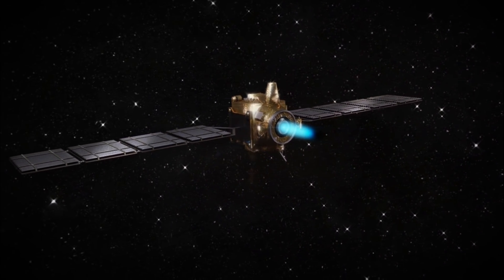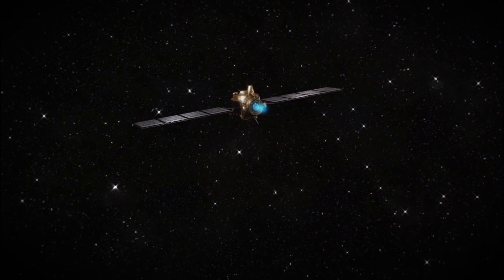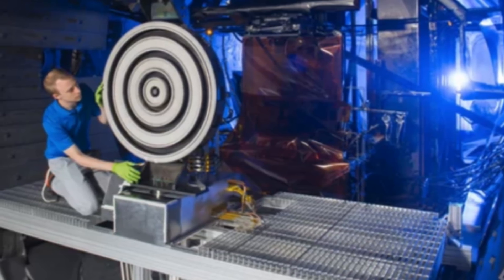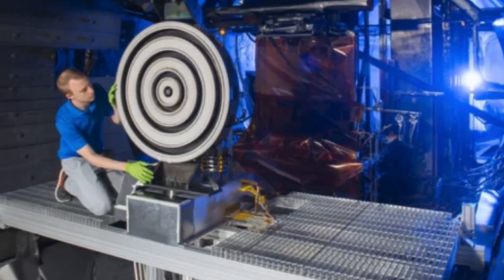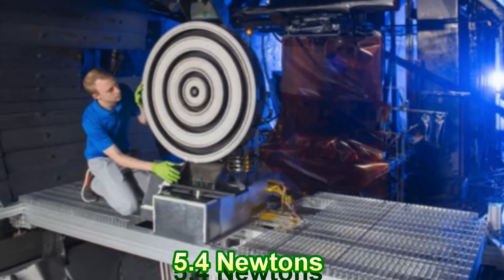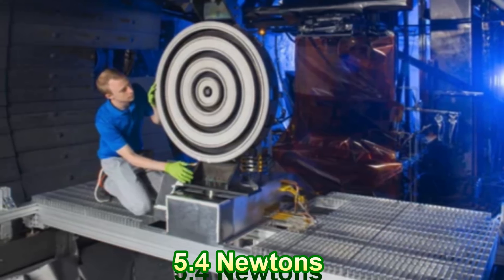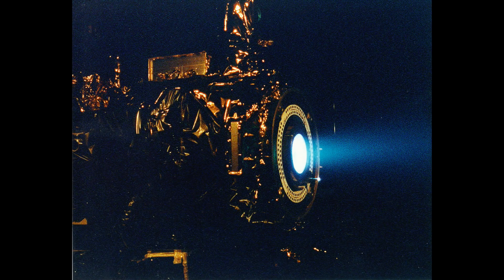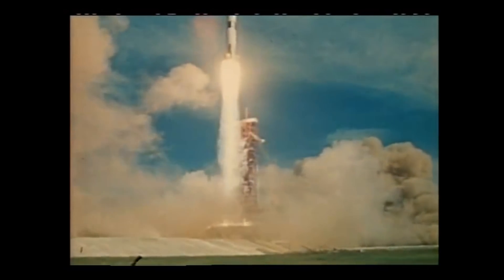It's important to know that thrust generated from the ion thrusters is very minimal. The X3 ion thruster tested at record breaking thrust of 5.4 Newtons. So, 5.4 Newtons is 1.1 pounds which is a little less than the weight of a basketball. This makes ion thrusters an impossible type of propulsion to launch spacecraft into space.